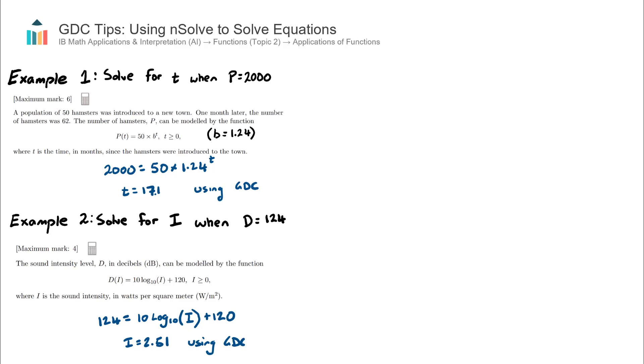I want to touch on one consideration when using nSolve: the calculator will always provide you with the left-hand solution. What does that mean? This first exponential function looks like this, and this was my solution that I wanted to find. There was only one solution here, so that was fine.